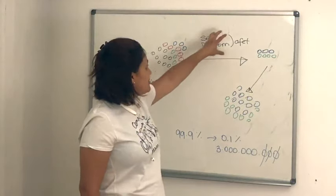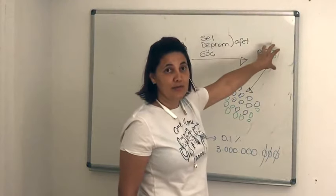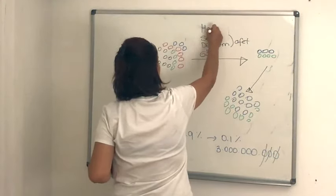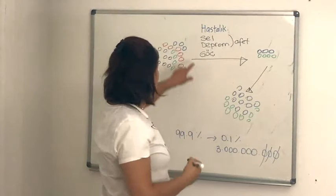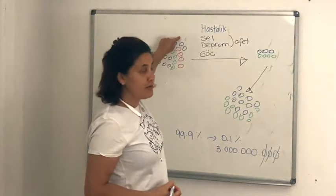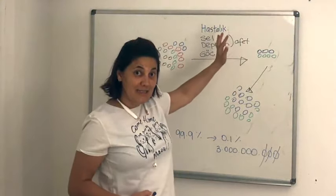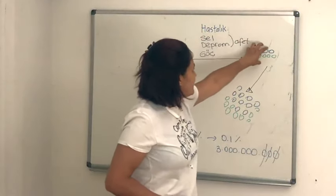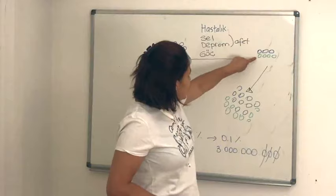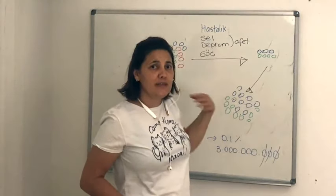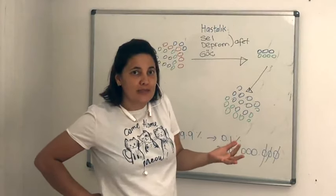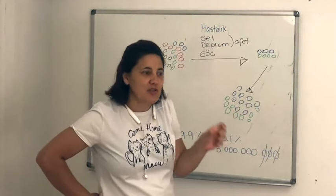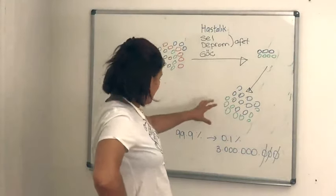Ama göç gibi, sel gibi, deprem gibi bir doğal afetse o zaman zaten rastgele bir ölüm olmuş oluyor. Biz buraya bir hastalık eklersek, o zaman bu hastalığa karşı avantaj sağlayan değişimleri olanlar hayatta kalıyor. Yani sebep-sonuç ilişkisi biraz değişik: bunlar onun için mutasyon geçirmediler; o mutasyona sahip oldukları için hayatta kaldılar. Bu topluluk çoğaldığı zaman o mutasyonun yaşamsal avantaja sahip olduğunu biz anlamış oluyoruz. İşte genom evrimi bu şekilde çalışıyor.